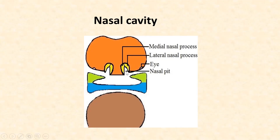This pit subsequently enlarges to form the nasal cavity, while the lateral nasal process forms the lateral wall of the nose. The maxillary process fuses with the lateral nasal process and then with the medial nasal process. The lateral and medial nasal processes also fuse with each other, thereby separating the nasal cavity from the oral cavity. There is also narrowing of the frontonasal process, which leads to formation of the nasal septum.